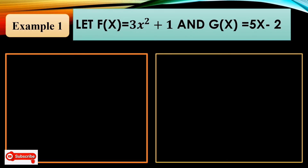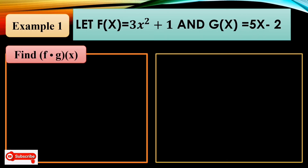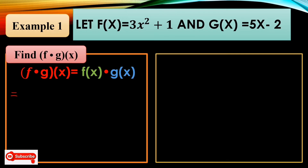Let f(x) = 3x² + 1 and g(x) = 5x − 2. Find the product f·g(x) = f(x) times g(x), which equals (3x² + 1)(5x − 2). In multiplying functions, we need to apply the FOIL method.